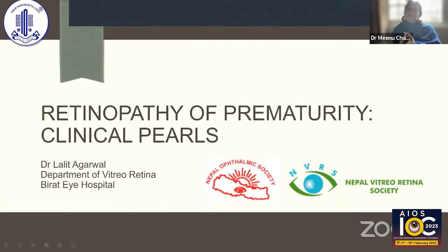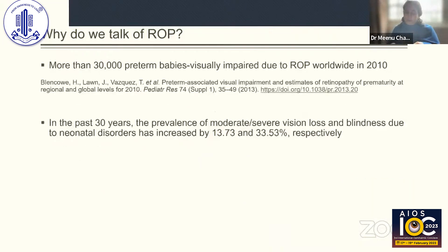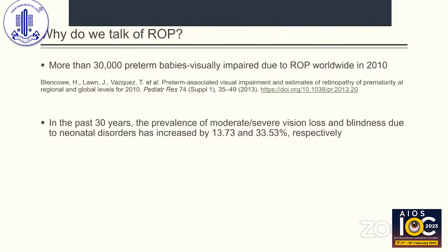Good afternoon everyone. When we talk of retinopathy of prematurity, the first thing is why do we want to talk of ROP? More than 30,000 preterm babies are seen to be having visual impairment due to ROP worldwide in 2010.